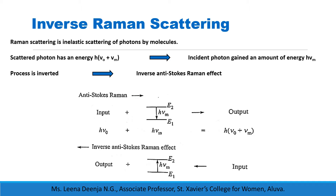We know that Raman scattering is inelastic scattering of photons by molecules. If a photon of energy h·ν₀ collides with a molecule in higher energy level E2, and the molecule jumps back to E1 by emitting h·νM, then the scattered photon energy equals h·ν₀ + h·νM, or h(ν₀ + νM). This is known as Raman anti-Stokes scattering.